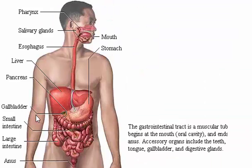The gastrointestinal tract is a muscular tube that begins at the mouth, or the oral cavity, and ends at the anus. Accessory organs include the teeth, tongue, gallbladder, and digestive glands.